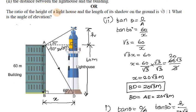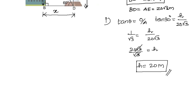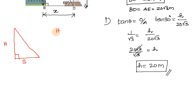The ratio of the height of the lighthouse to the length of its shadow on the ground is root 3 to 1. Given height to shadow ratio is root 3 to 1, we need to find the angle of elevation. The height is the opposite side and the shadow is the adjacent side.